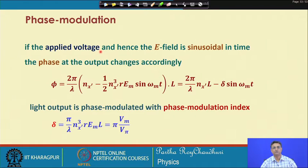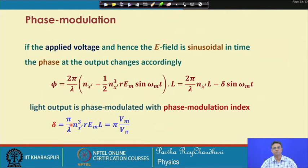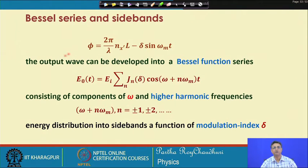In phase modulation, if the applied voltage and hence the electric field is sinusoidal in time, the phase of the output is represented as (2*pi/lambda)*n_x-dash plus an additional modulated phase. The output is phase modulated with a modulation index equal to this value. Using the Bessel series expansion, delta-phi_E_0(t) can be written as components of omega and higher harmonics.